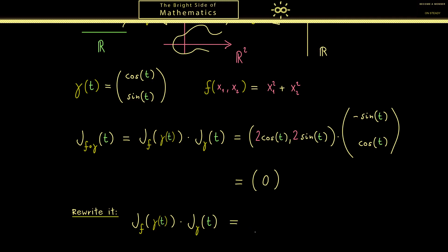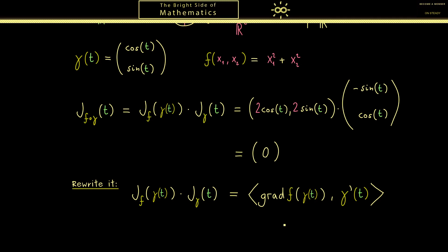In other words we can rewrite this matrix product as an inner product. So we have the inner product of the gradient of f at the position γ(t) with the Jacobian matrix of γ(t). But of course this one we can simply write as γ'(t). Therefore in the end you see we just multiply two vectors in the inner product. And as always I use the pointed brackets to denote the inner product. However it's simply the standard inner product in R² you often also see denoted with a dot.